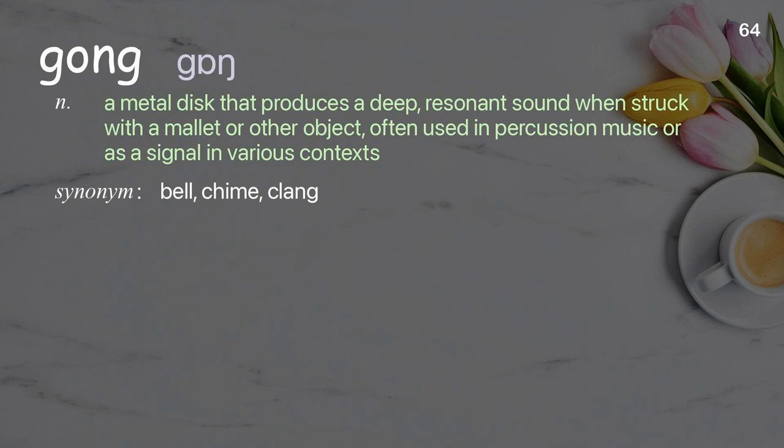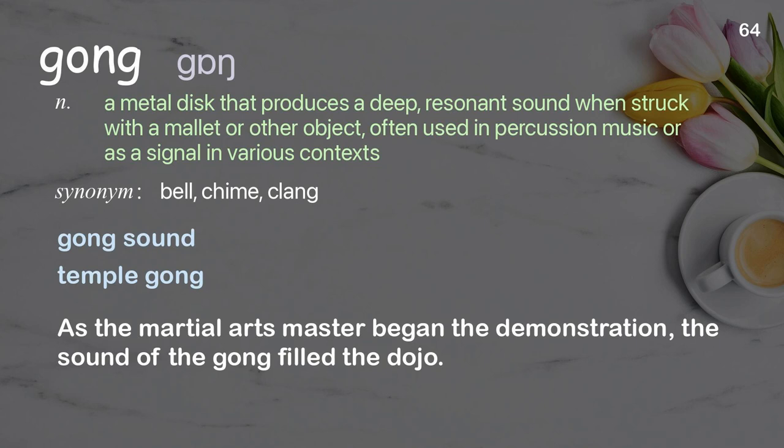Gong: a metal disc that produces a deep, resonant sound when struck with a mallet or other object, often used in percussion music or as a signal in various contexts. Examples: gong sound, temple gong. As the martial arts master began the demonstration, the sound of the gong filled the dojo.